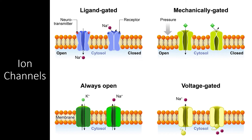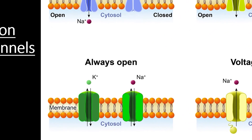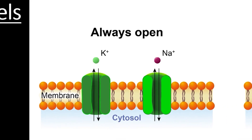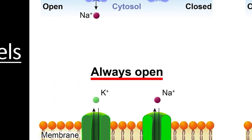Similar to how aquaporins only allow water through, there are a large number of ion channels that only allow specific ions through the cell membrane. There are several different types of ion channels that allow for facilitated diffusion of different ions under different conditions. Some ion channels are always open, allowing for the passage of ions in either direction all the time. Typically, this form of ion channel is used when a concentration gradient needs to be constantly relieved due to the buildup of ions from biochemical reactions elsewhere in the cell.